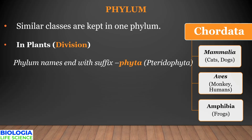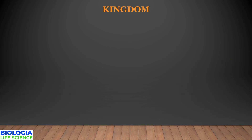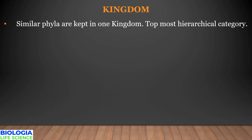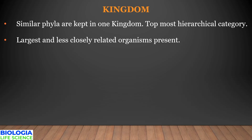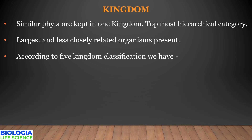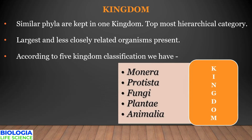The final and highest category in taxonomic hierarchy is kingdom — a group of phyla or divisions with less closely related organisms. Phyla lacking cell walls and chlorophyll are placed in kingdom Animalia, while all divisions of plants with rigid cell walls and chlorophyll are placed under kingdom Plantae. According to the five-kingdom classification, kingdom is divided into five groups: Monera, Protista, Fungi, Plantae, and Animalia.